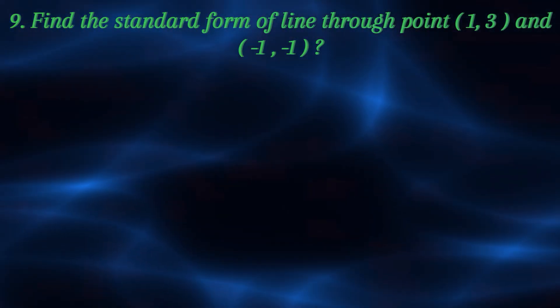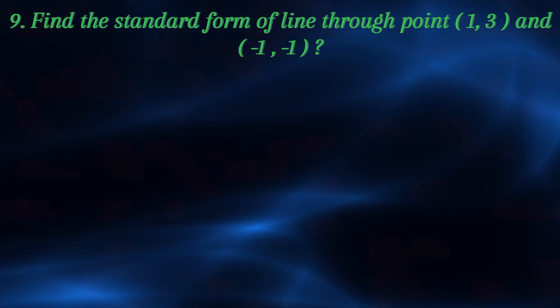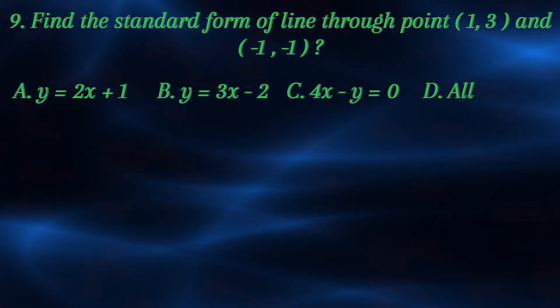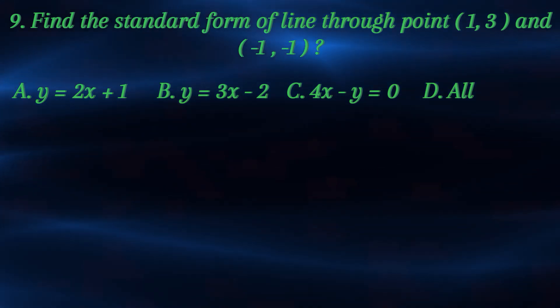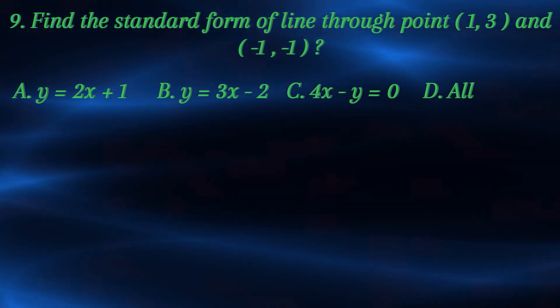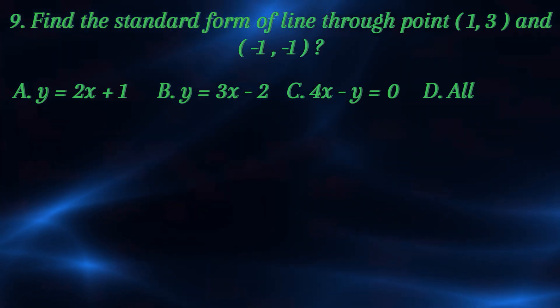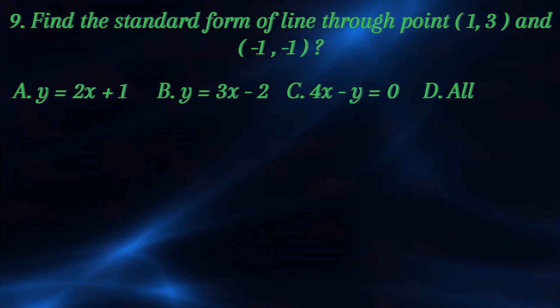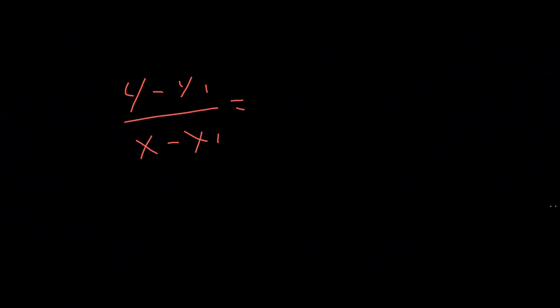Find the standard form of line through point (1,3) and (-1,-1). Answer choices: a) y equals 2x plus 1, b) y equals 3x minus 2, c) 4x minus y equals 0, d) all. We use the point-slope formula: y minus y1 over x minus x1 equals m.